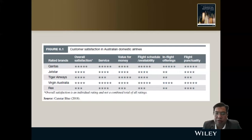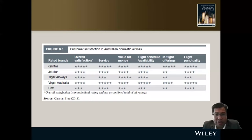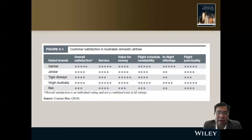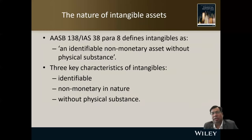An example of intangible assets is airline customer satisfaction data. Some Australian airlines have suffered losses and some, like Tiger Airways, may have gone into liquidation. Customer satisfaction scores like those for Qantas and Jetstar cannot be measured and capitalized as assets in financial statements.